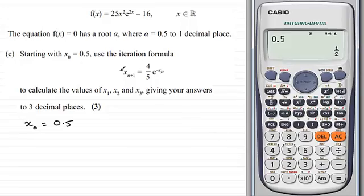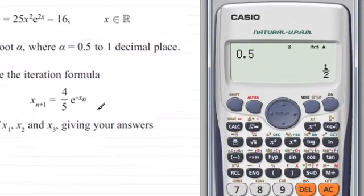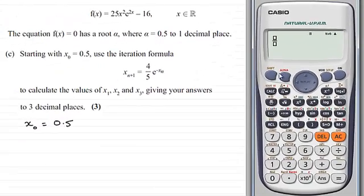Now we just need to enter our iterative equation. We'll start with the fraction by pressing the fractions button, and entering four on the top, and move the cursor down to enter five here by pressing five. We'll move the cursor now to the right of the fraction.